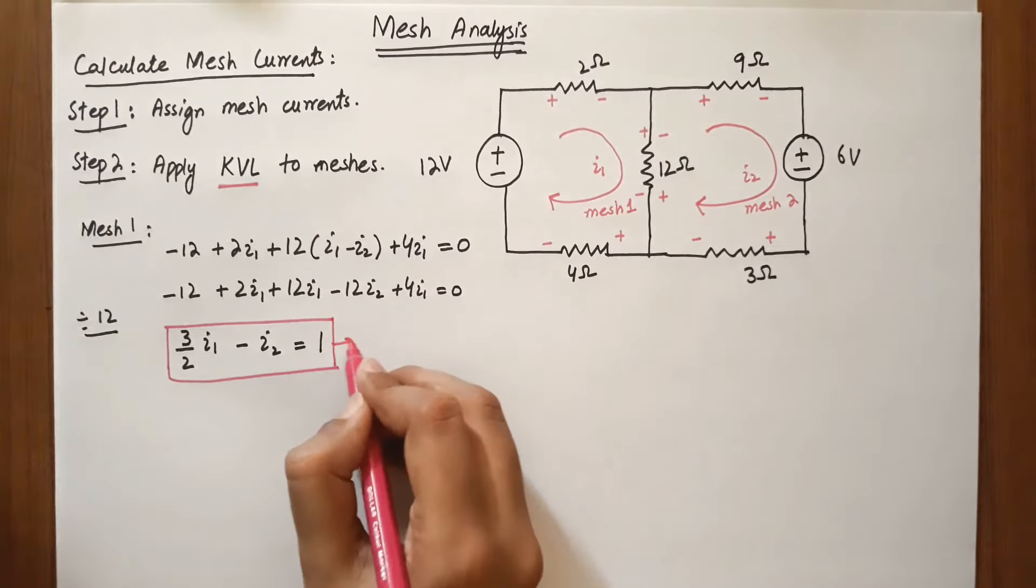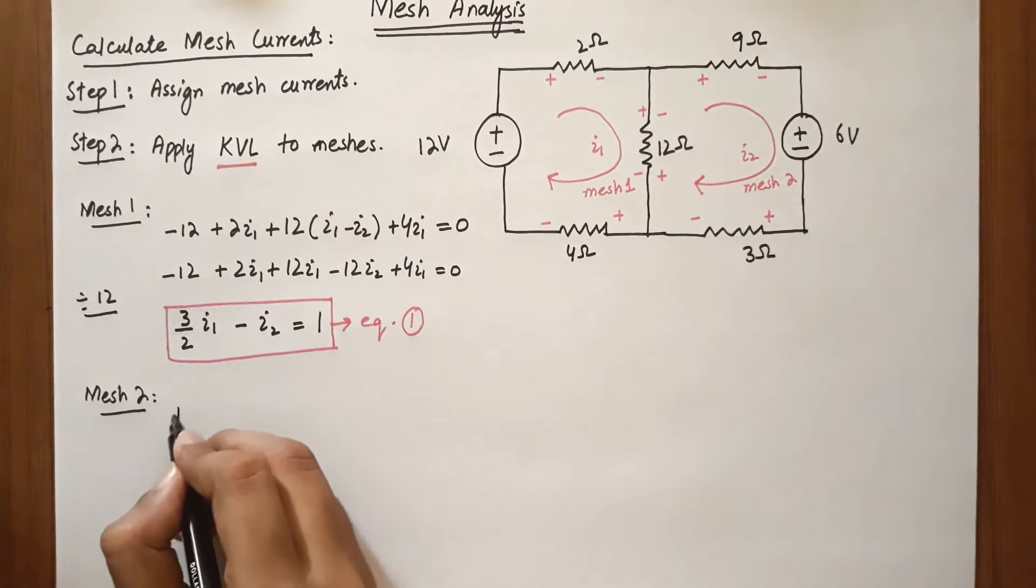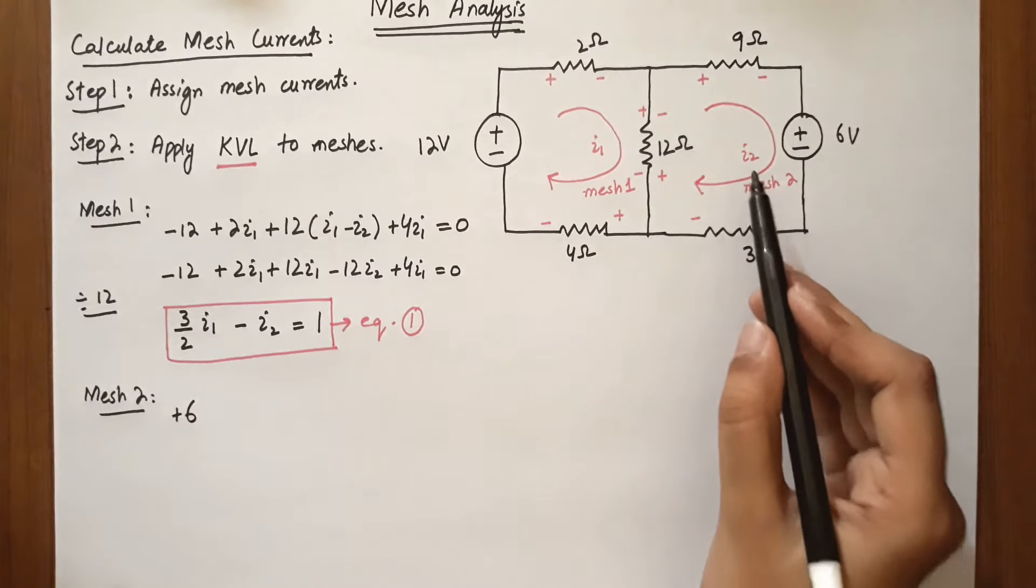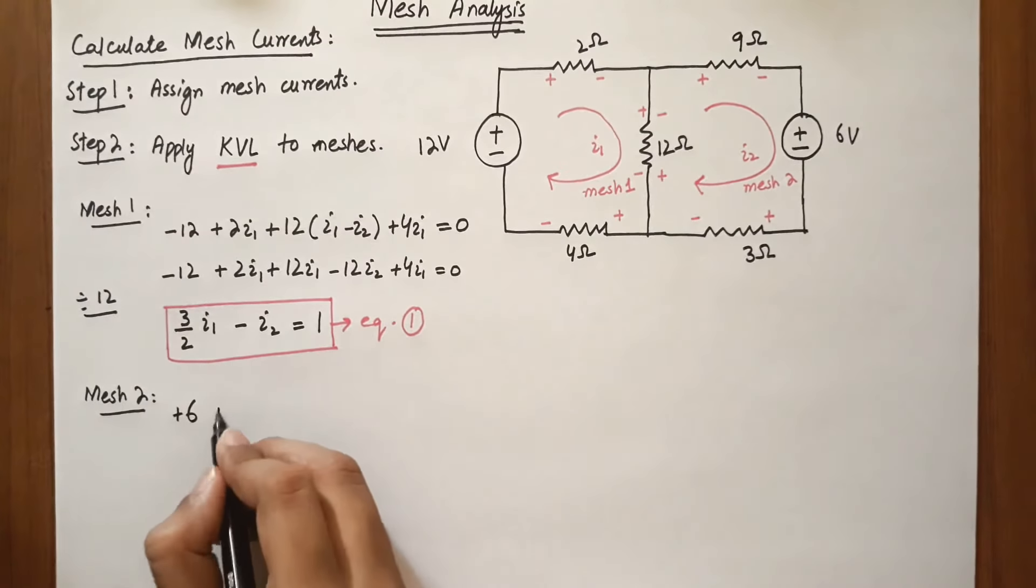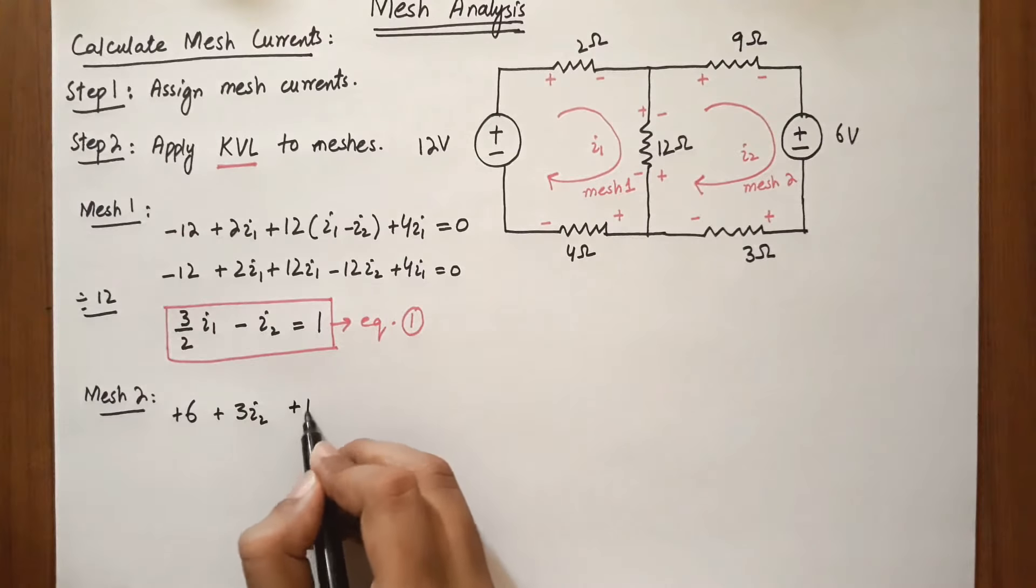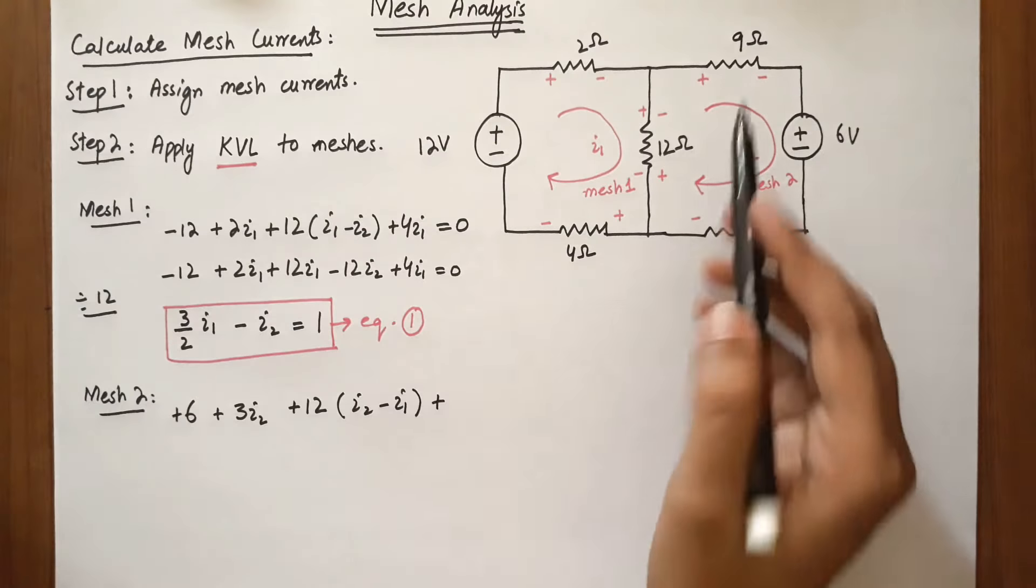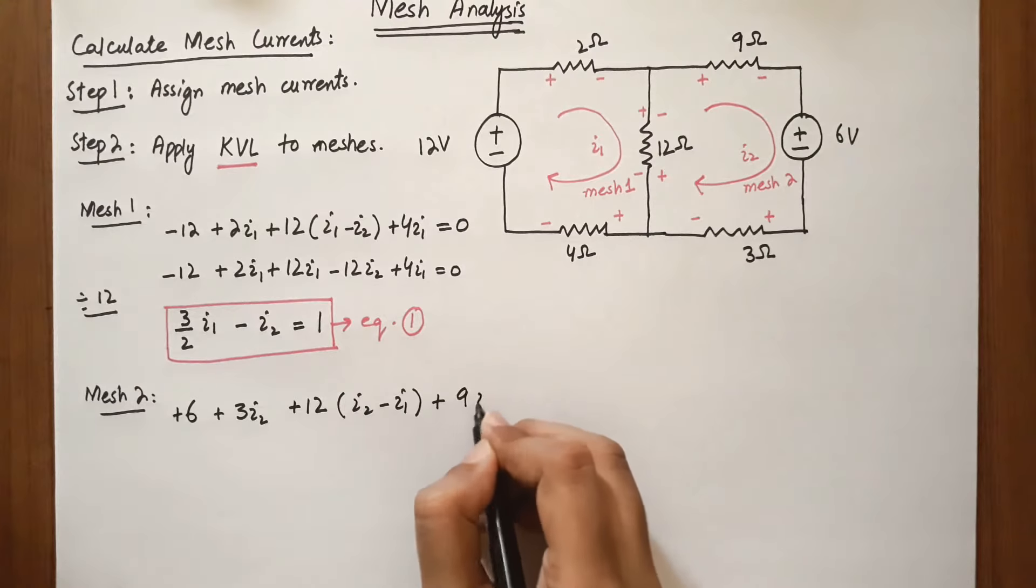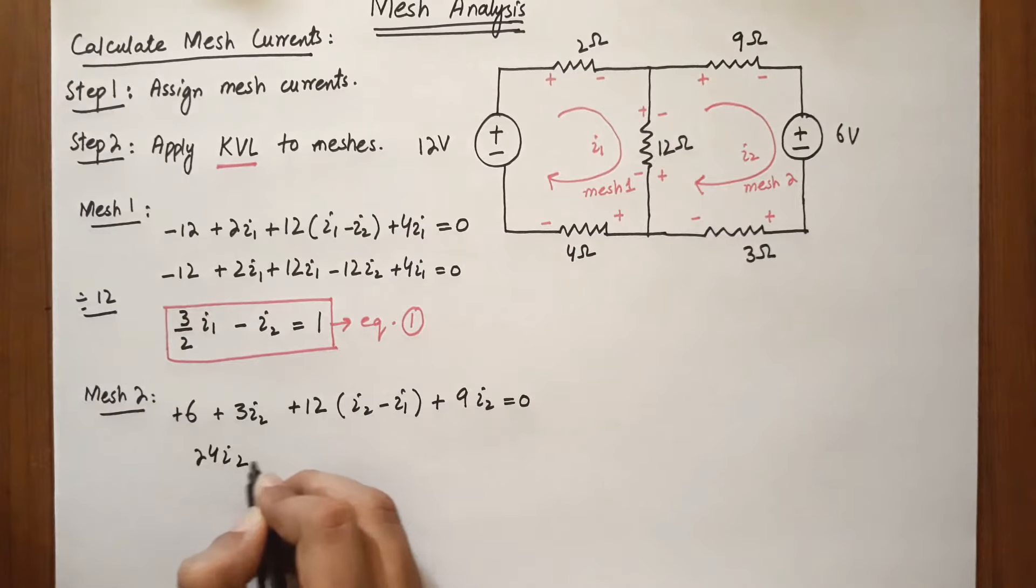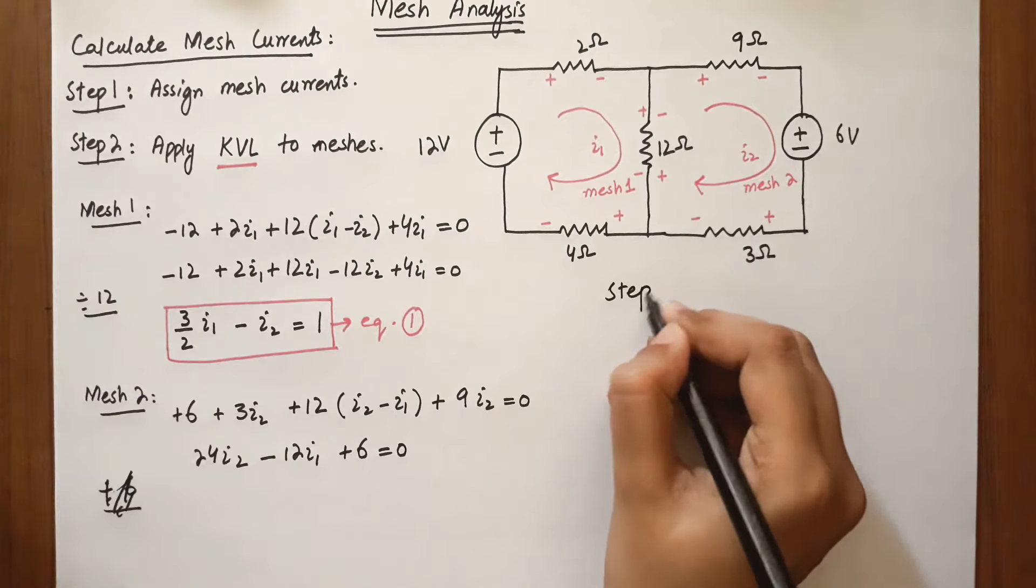For mesh 2, starting from the voltage: plus 6 plus 3I2 plus 12I2 minus I1 plus 9I2 equals 0. Current I2 is positive, and we subtract the mesh 1 current flow. The third step is to solve these equations to obtain mesh currents.